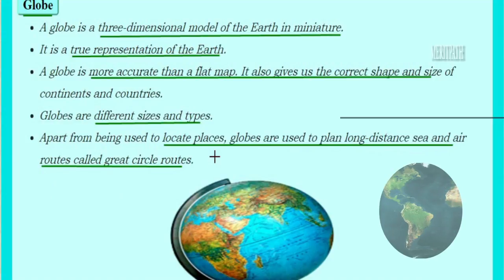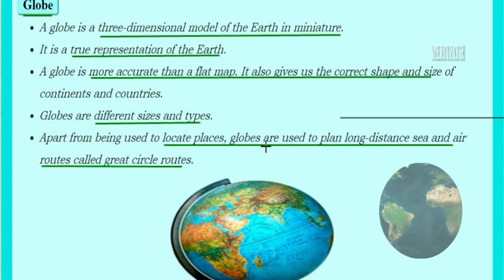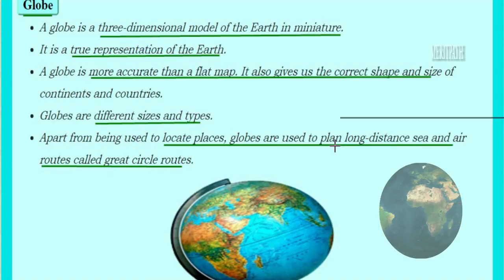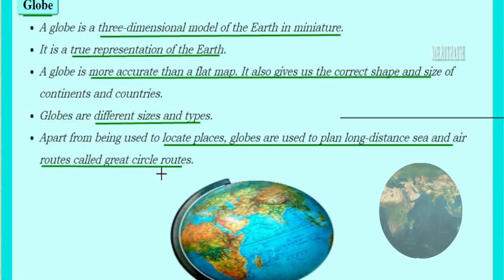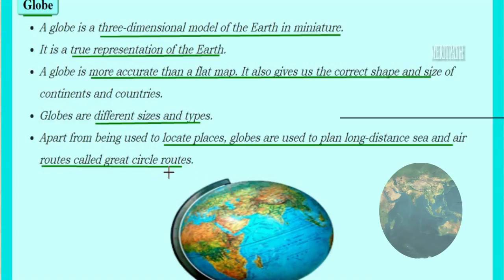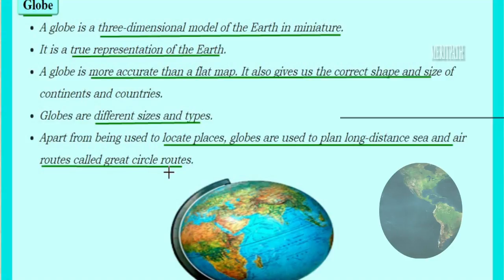What are the uses of a globe? A globe is used to locate places. Globes are also used to plan long-distance travels via sea and via air. Planning these travels using a globe is known as great circle routes, so air routes and sea routes can be planned using a globe.